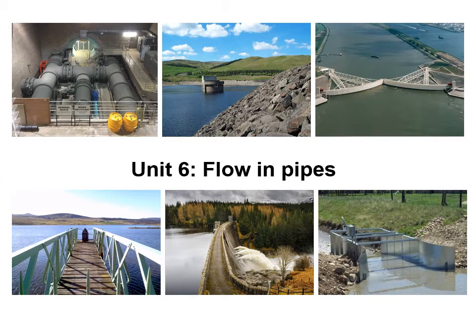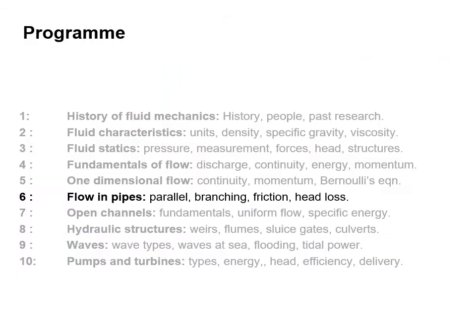This is Unit 6 of 10 and in this unit we're going to look at flow in pipes — specifically friction and head loss. In the tutorial questions we're going to look at parallel and branching pipes and some of the calculations associated with these subjects.